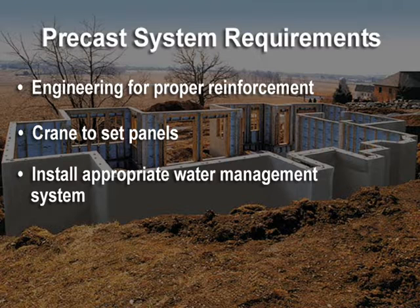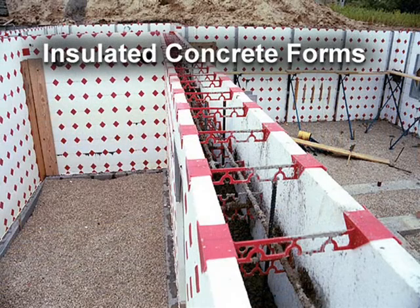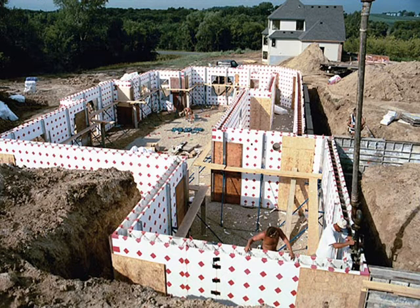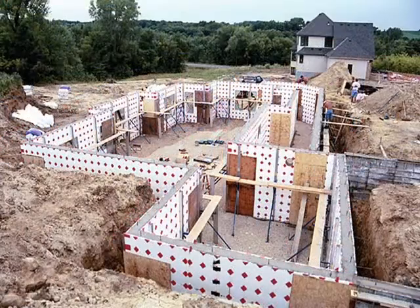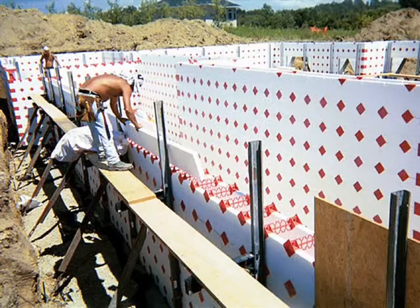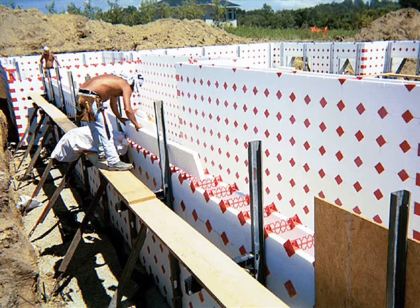Some precast systems can reduce installation time and labor cost. Insulated concrete forms, or ICFs, are a modification of traditional poured-in-place concrete. ICFs use a rigid foam insulation as the forming system for the concrete wall. This insulation is left in place after the pour. This system provides the strength of a concrete wall and the warmth of insulation in one process. The ICF system is user-friendly and may be easily adapted by traditional masonry contractors.